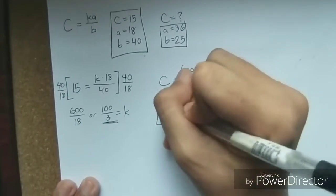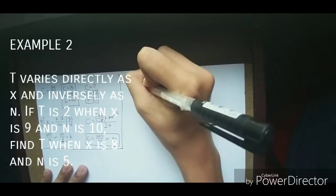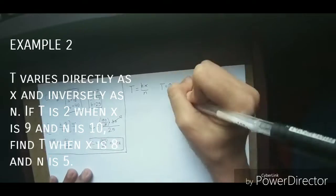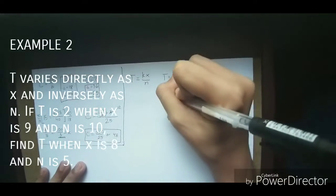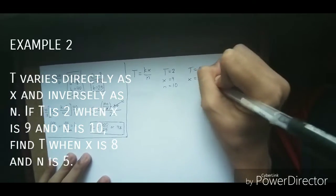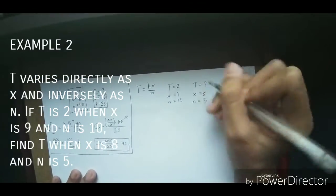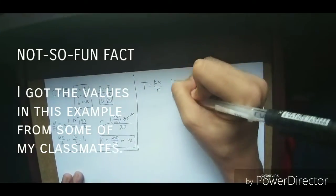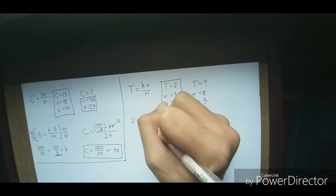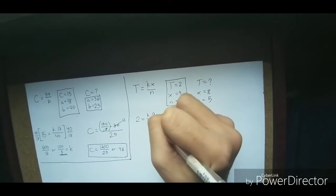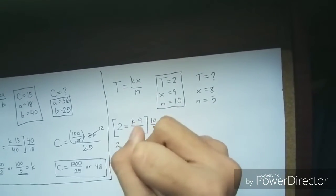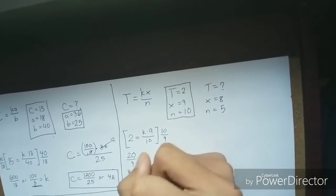T varies directly as X and inversely as N. If T is 2 when X is 9 and N is 10, find T when X is 8 and N is 5. We do the first step like what we did in the first example. We use our first set of values and substitute them into an equation like this. We isolate k by multiplying 10 over 9 to both sides, which leaves us with 20 over 9 as our value for k.